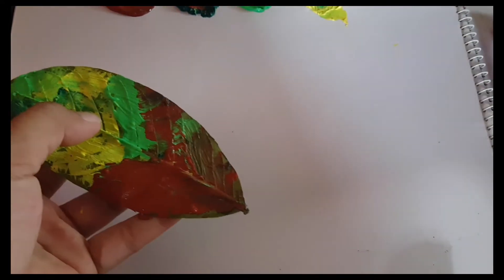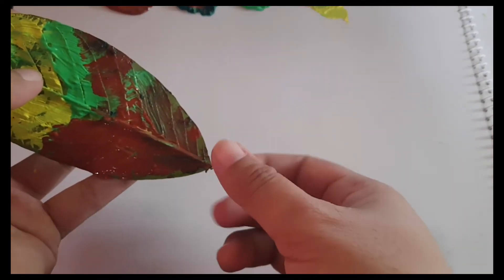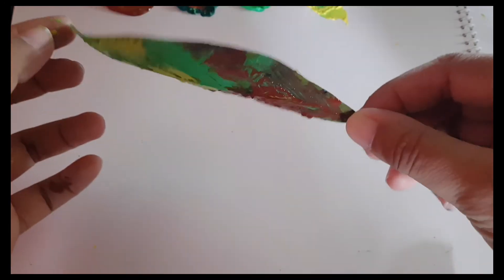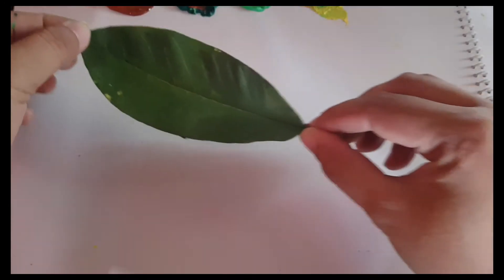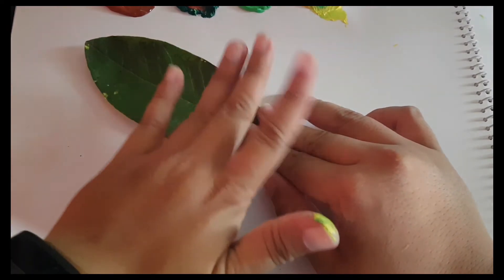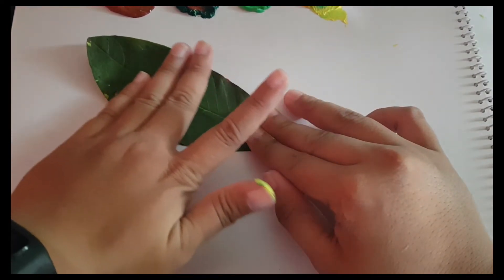Okay, so this will be the wing—the first part of the wing of my butterfly. So after putting or after painting this one, we're going to put it like this on our Oslo paper. Careful, careful, and we're going to press it this way.